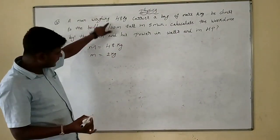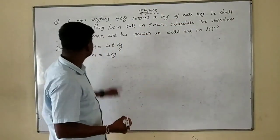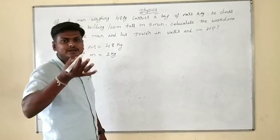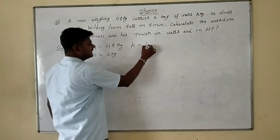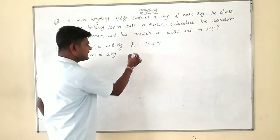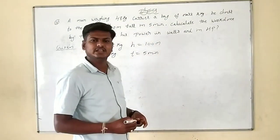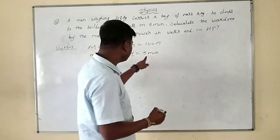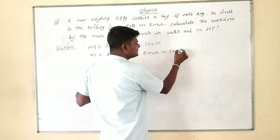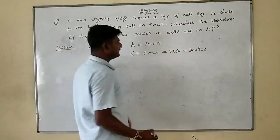Man mass capital M is 48 kg, carries a bag of mass small m is 2 kg. He climbs a building 100 meters tall, so h equals 100 meters. Time given is 5 minutes. Since minutes are not SI units, we convert: 5 minutes equals 300 seconds.